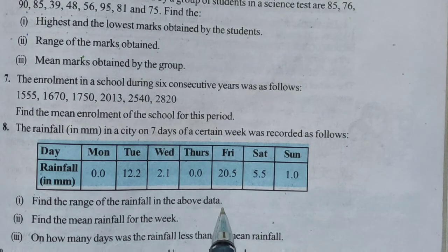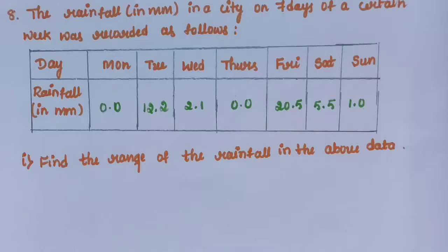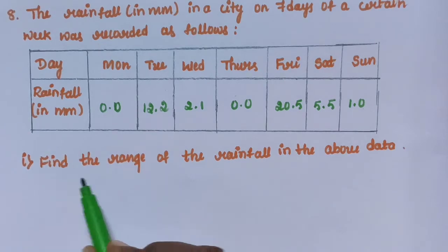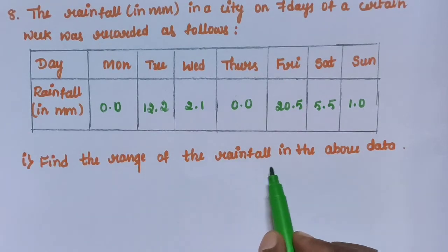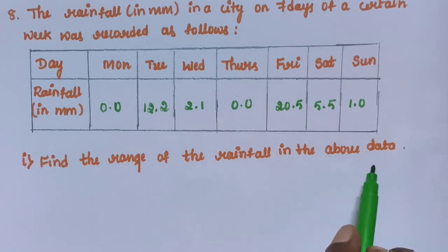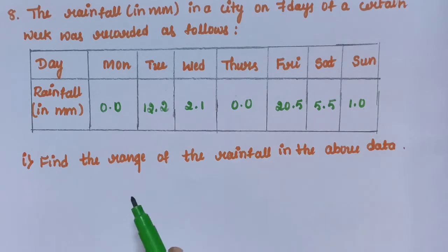Sub question 1: Find the range of the rainfall in the above data. You already know about the range — it is the difference between the highest value and the lowest value.